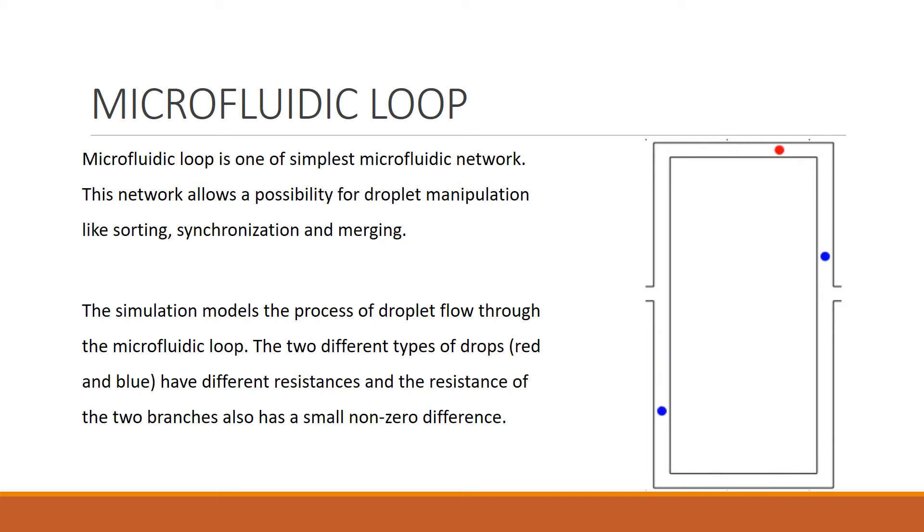For the periodic input droplet flow, the output can be periodic or aperiodic. The Poincaré map of the output junction can be periodic, two-periodic, three-periodic, chaotic, etc. It depends on the separation between the drops and their flow rates. The simulation of the process demonstrates one such case.